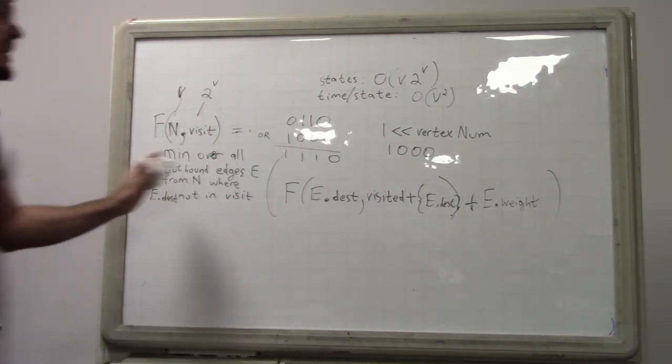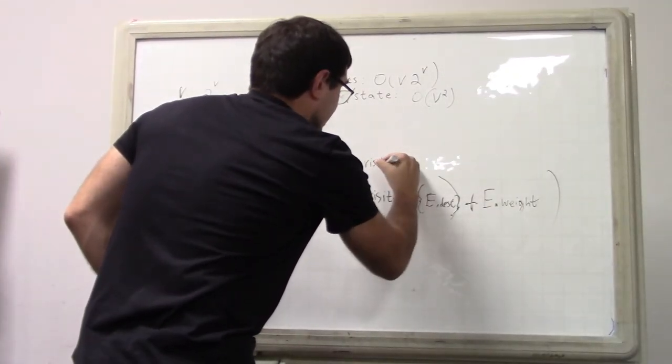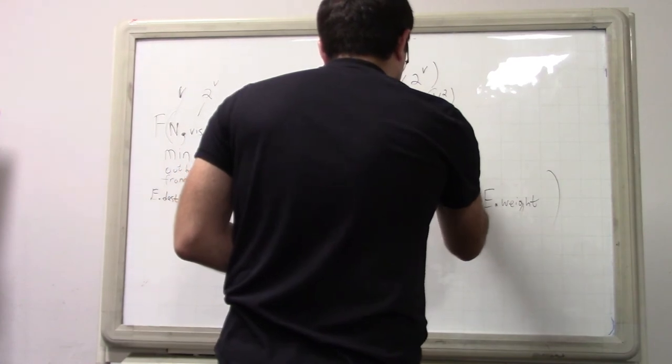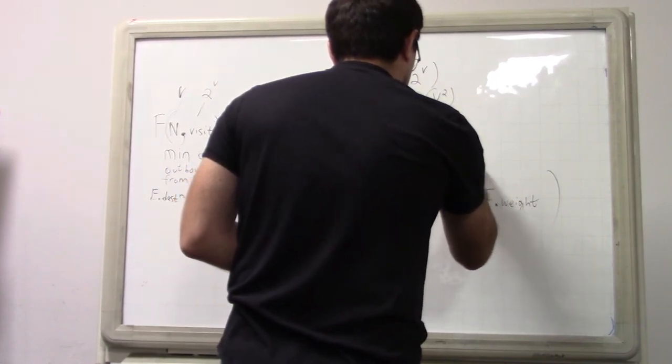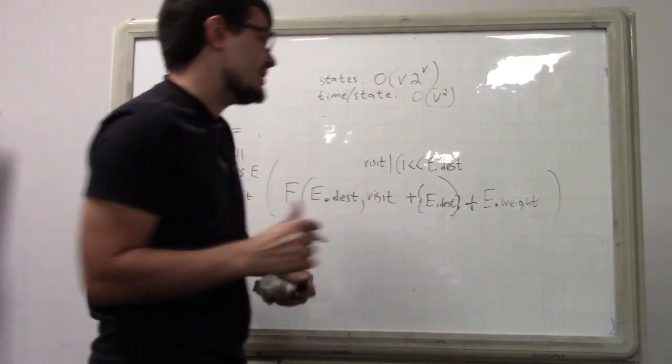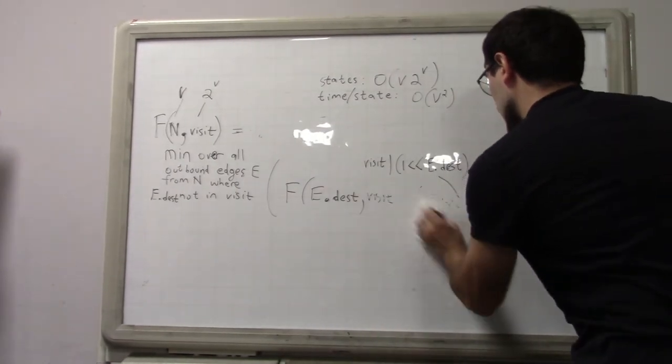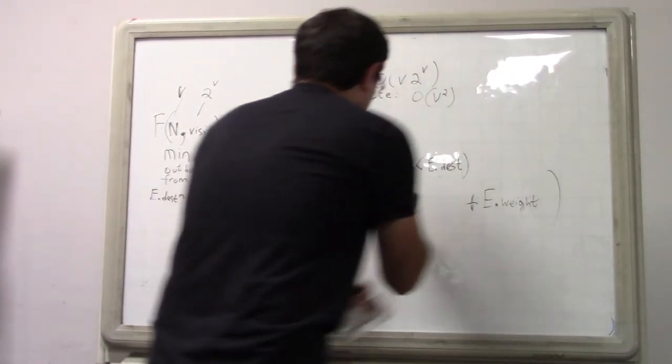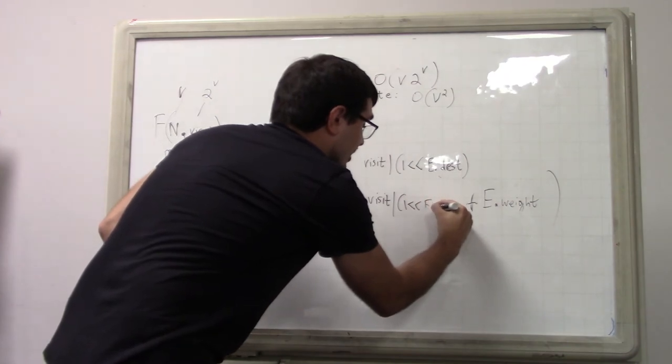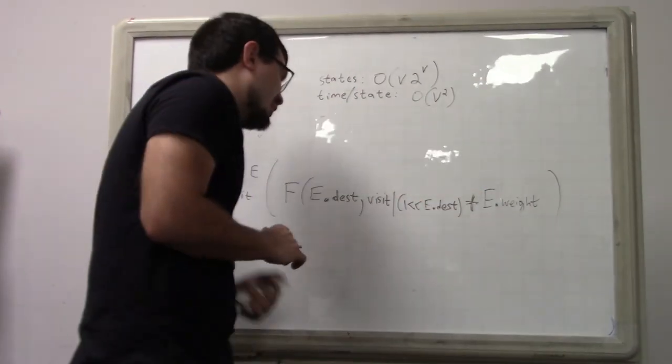So the logic here basically becomes something like take visited, and visited is now an integer so I call it visit for short, visit and then logically or that with one shifted left by e dot destination. I'm assuming e dot destination here now is like a number. It's the number of the vertex and the numbers are from zero to however many vertices minus one. We can now just kind of replace that like this and this operation can be considered order one.